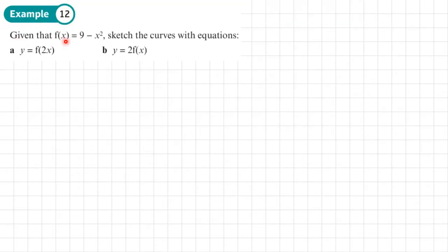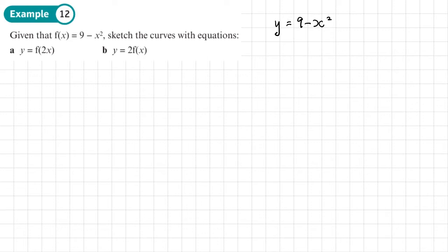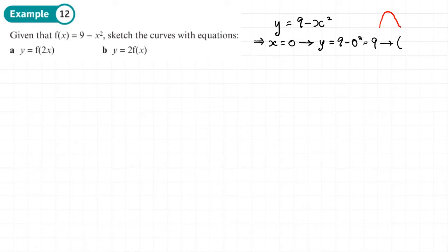Example 12: given that f of x equals 9 minus x squared, sketch the curves with these equations. We'll first sketch the base graph. Writing it as y equals 9 minus x squared, I know because the coefficient of x squared is negative this is going to be an n-shaped quadratic. Making x equal to 0 gives y equals 9, so we get the coordinate (0, 9).